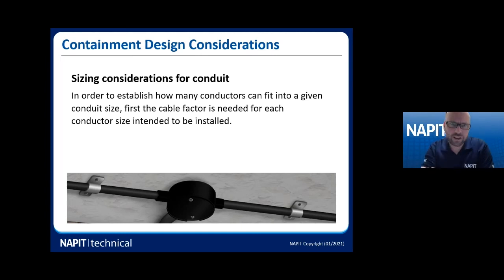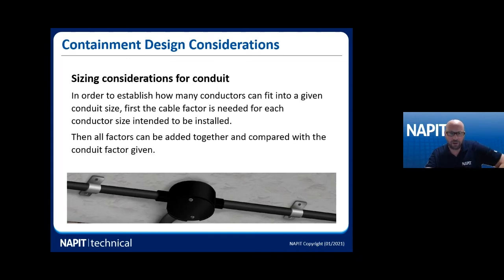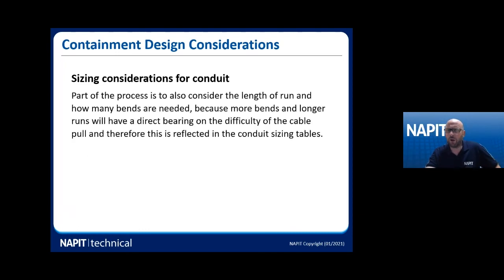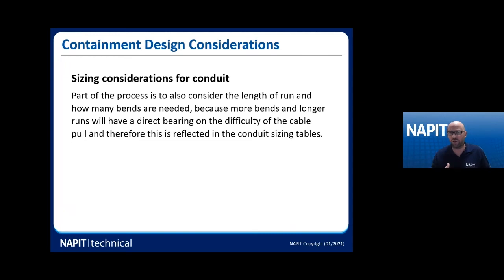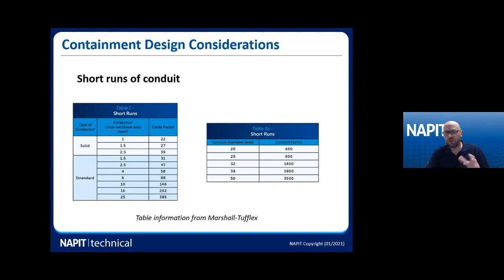Now looking at sizing considerations for conduit. In order to establish how many conductors can fit in, you need the cable factors for each conductor size — it's very similar to trunking. You add all the factors together and compare them with the conduit factor. Part of the process is to consider the length of run and how many bends are needed. The more bends and the longer the run, the more difficult the cable pull — more distance, more bends means more friction — and the tables reflect that.